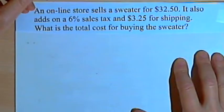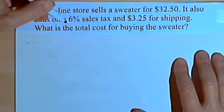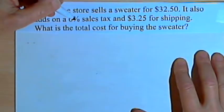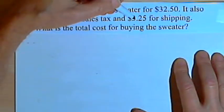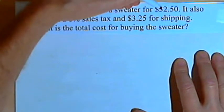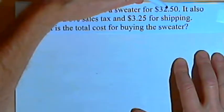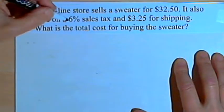Okay, so we've got two steps to do. First we want to find out how much the sales tax was, and then we want to add that amount and the $3.25 for shipping to the original cost of the sweater, $32.50. So let's find out what the sales tax is.